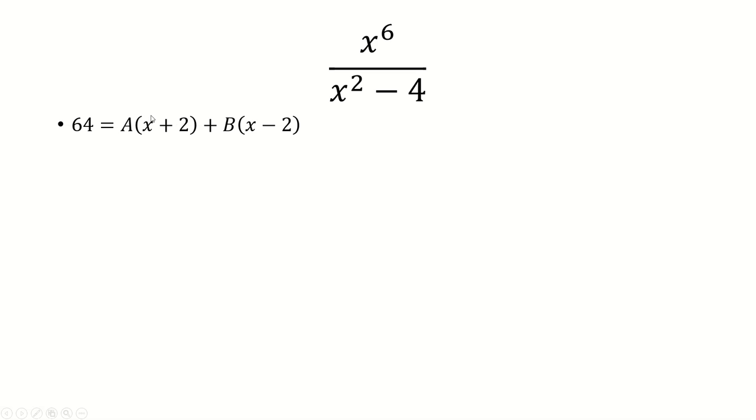The first value is going to make the first term 0, so that's when x is negative 2. We have 64 equals negative 4b, so b is negative 16.